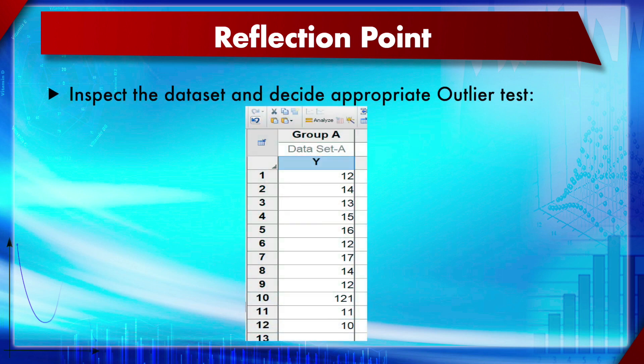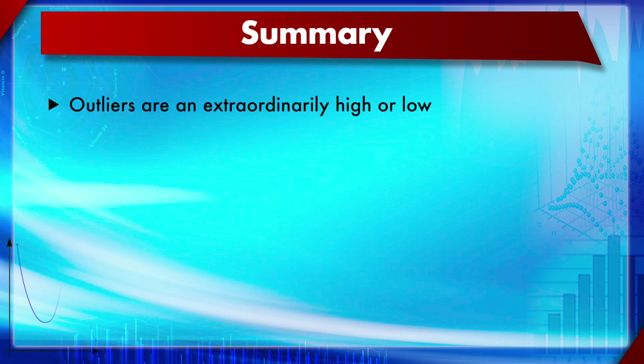Here is a mini reflection point. Inspect this data set — it is a screenshot from GraphPad Prism. Can you choose an appropriate outlier test? You may pause the video now. As you can see, this data set has only one outlier, so the Grubbs test would work. However, you can also go with the ROUT method, which works for detecting one or multiple outliers and is therefore more advantageous.